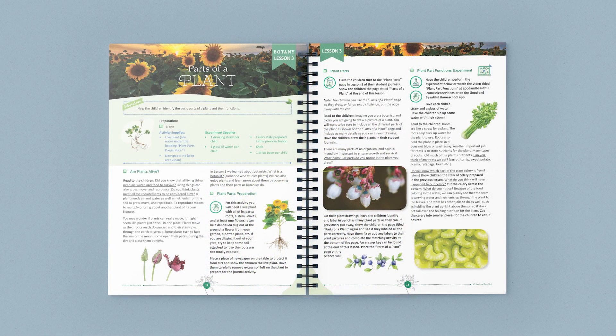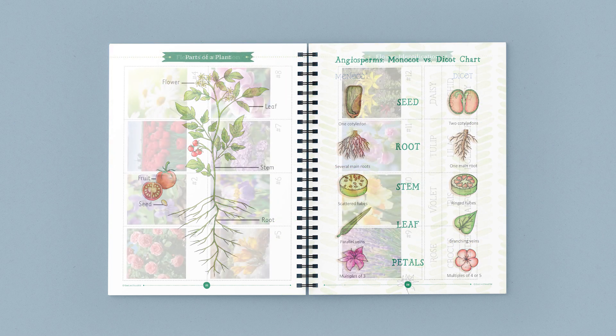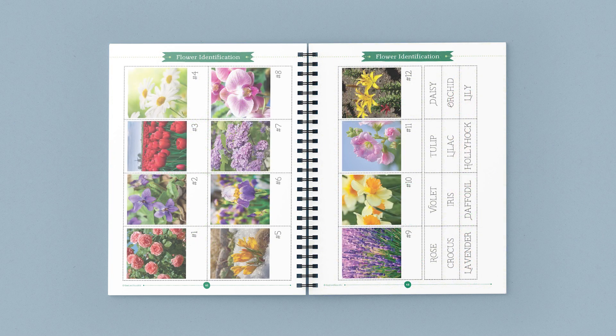The full-color course book contains vocabulary terms, supply lists, and 13 scripted lessons. These easy-to-teach lessons use photographs, diagrams, activities, and videos to help bring botany to life.